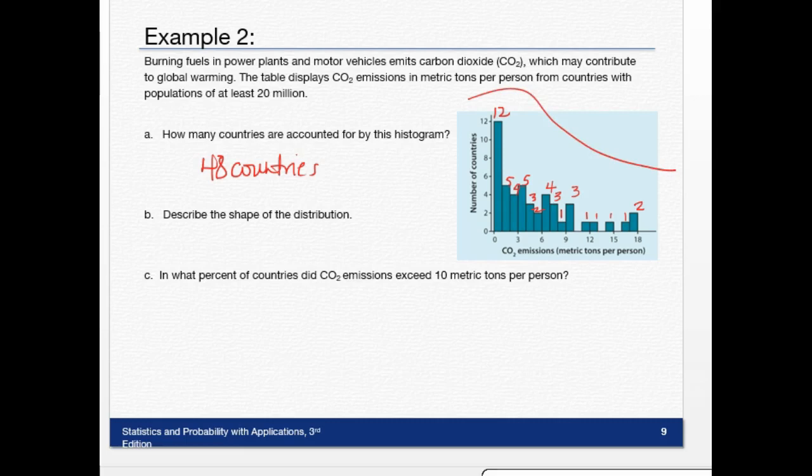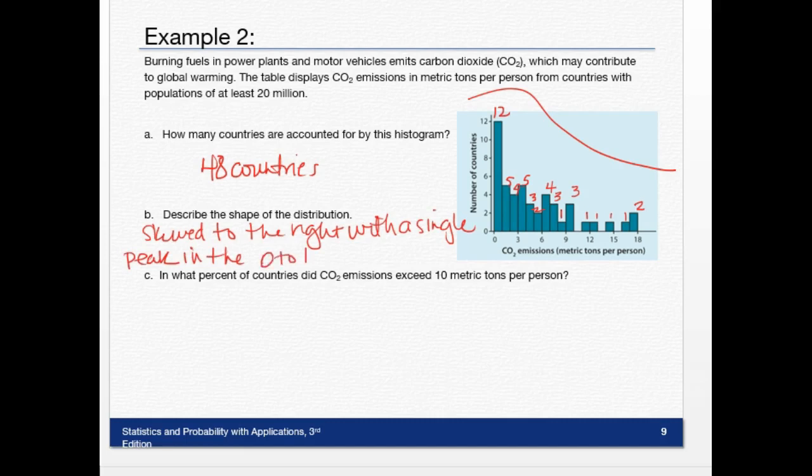So if I describe the shape of the distribution, we would say skewed to the right with a single peak in the 0 to 1 interval. And then there's some gaps here. There are gaps between 9 and 11, and 13 and 15. So we identify the gaps, identify any peak, and we look at the shape.